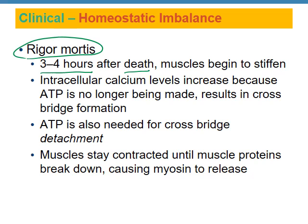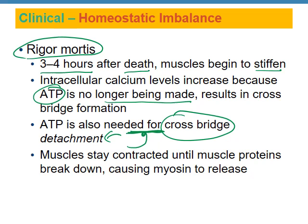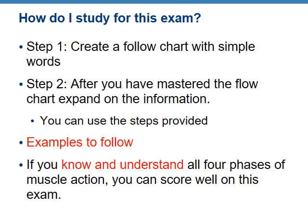What is rigor mortis? Three to four hours after death, the muscles begin to stiffen because there is no ATP being made. Without ATP, the cross-bridge can't detach. All of the myosin heads remain bound to the thin myofilaments, and the muscles stay in a contracted state until the muscle proteins start to break down. Once myosin and actin start degrading, the muscles will no longer be contracted.